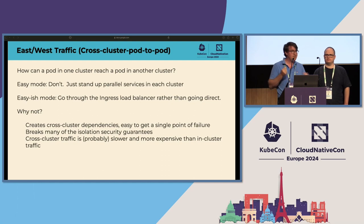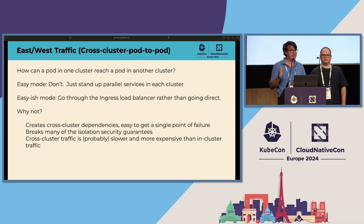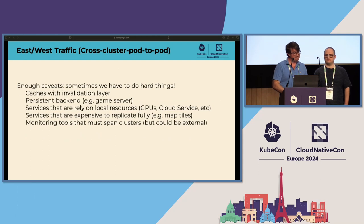We're trying to avoid east-west traffic — it's a big can of worms where pods talk to pods in other clusters. If we can avoid that, it's worth considering. Stand up parallel services; all clusters are homogenous and they don't talk to each other. If we can consume services from outside the cluster, it helps us stay in that happy case. In general, when dealing with east-west, it's easy to accidentally create a single point of failure, easy to mess up security, and cross-cluster traffic gets much more expensive.